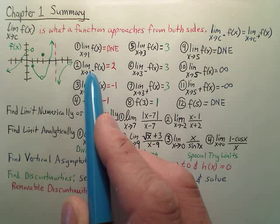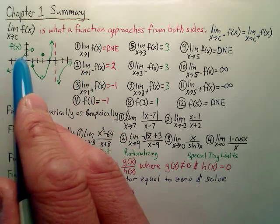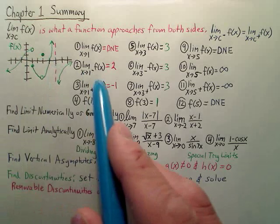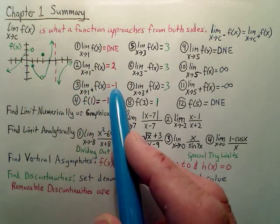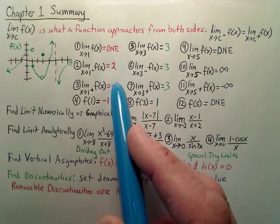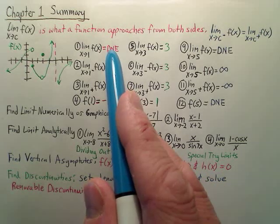As you can tell, the left limit, the negative side, this graph approaches 2. From the positive side, this graph approaches negative 1. So these two values do not agree, so it does not exist.